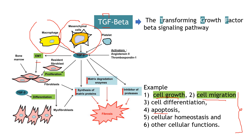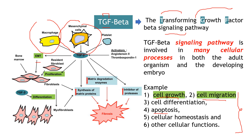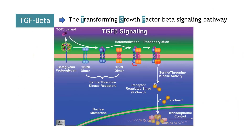Key information: every time you see GF it means growth factor — in this case, transforming growth factor. It is a signaling pathway involved in many processes. As I said, some of them can be opposite. Very important: cell growth, cell migration, and in some cases it will involve apoptosis and cellular homeostasis.